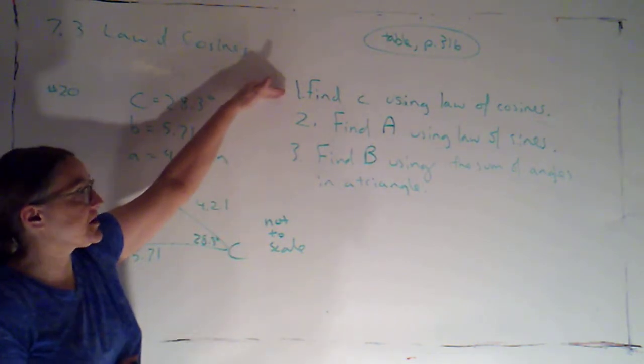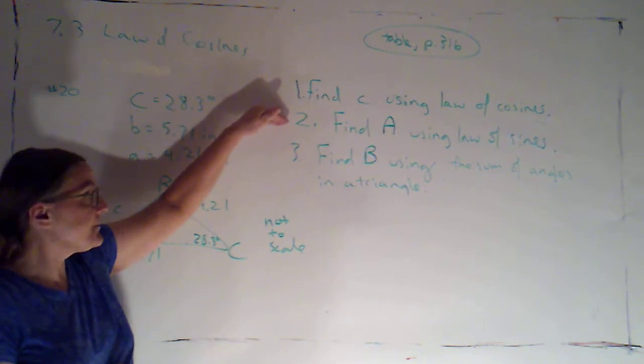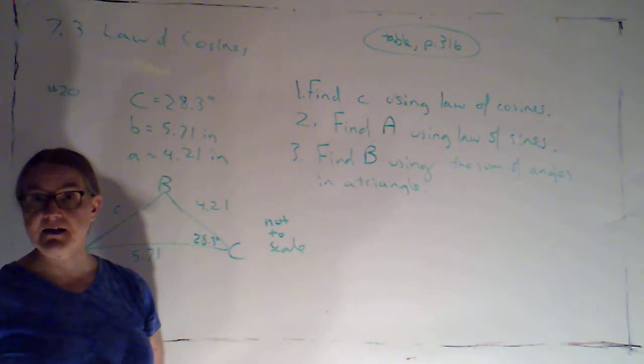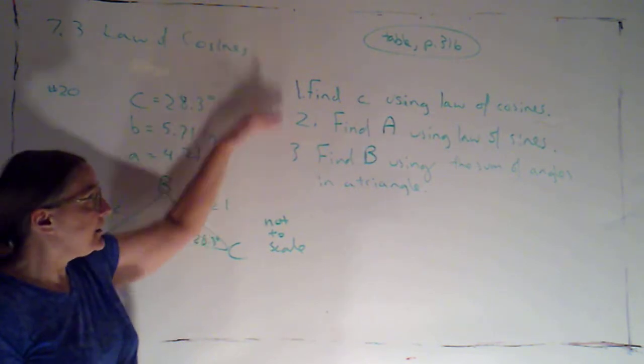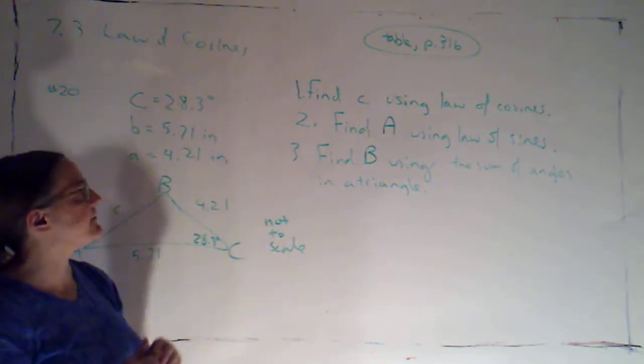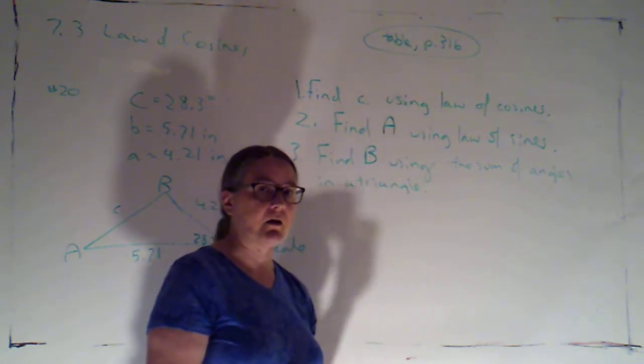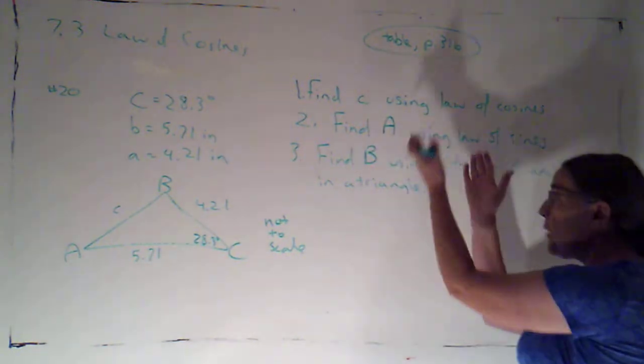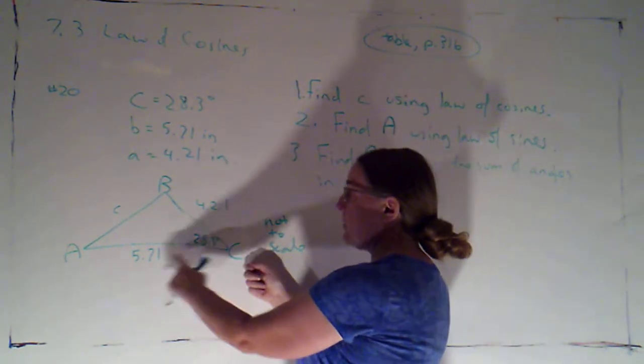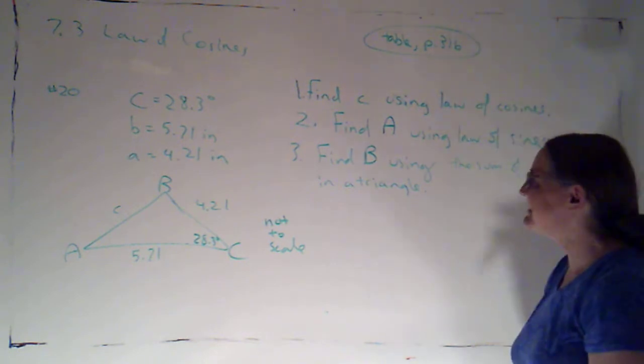So here I'm telling you that we're going to first of all find side C, and for that we're going to use the law of cosines. Then we're going to find angle A, and for that we're going to use law of sines. And then we're going to find angle B. Anytime we're finding the third angle, we're just using the fact that the angles in a triangle add up to 180 degrees.